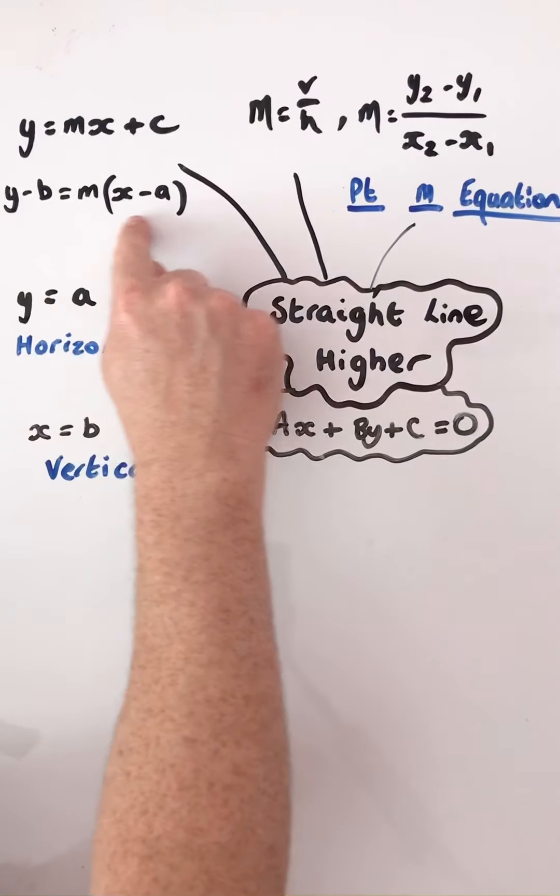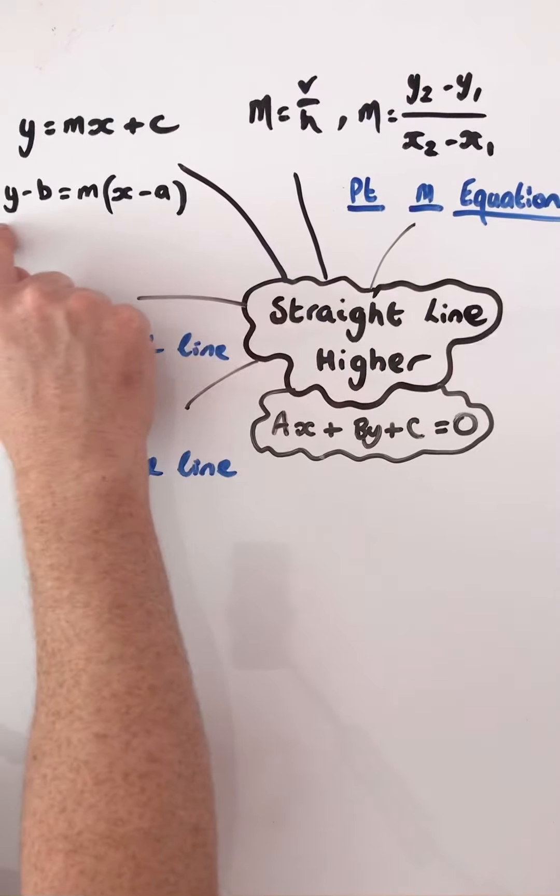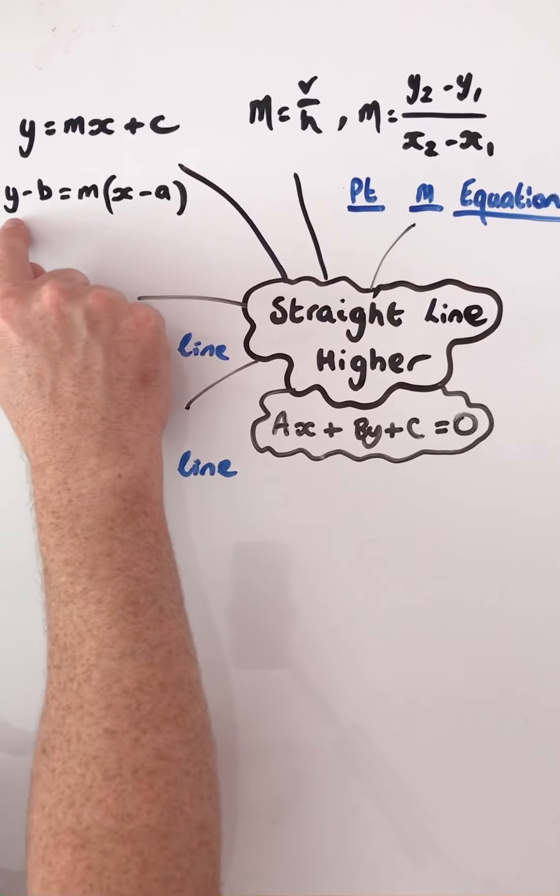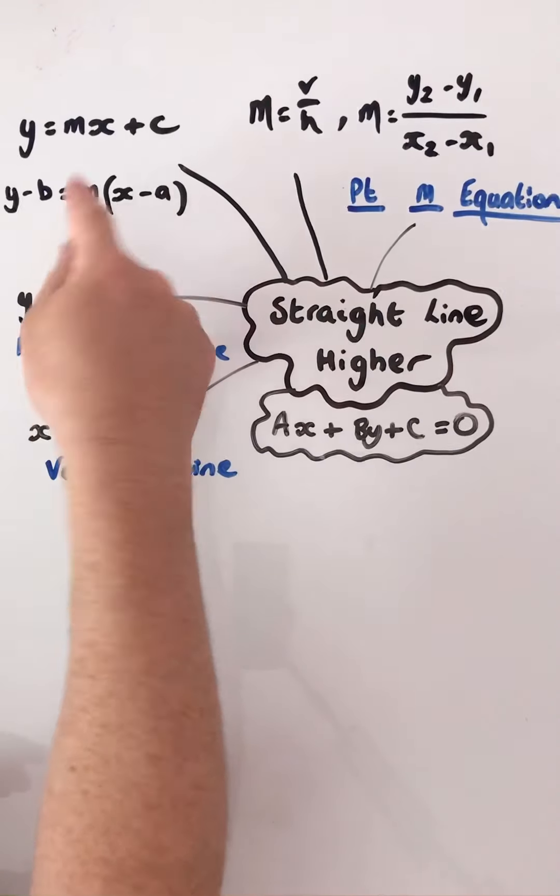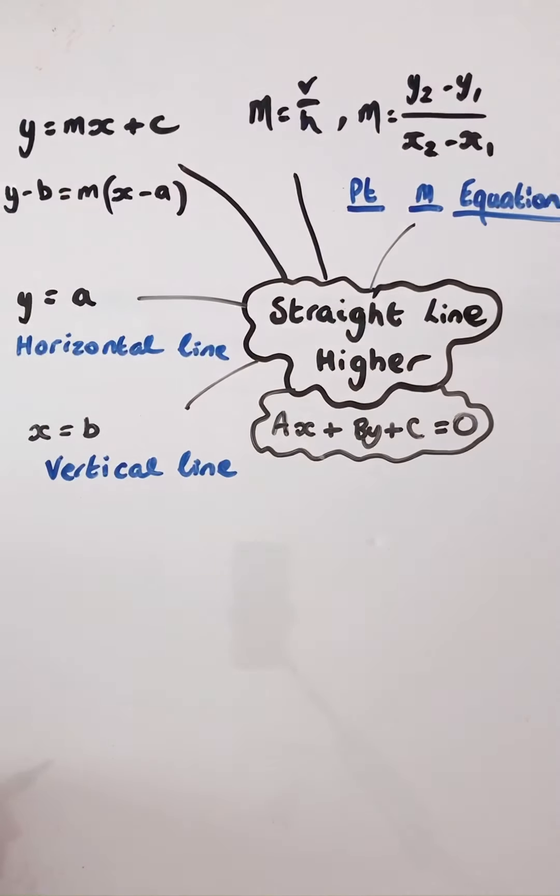We end up using and favouring, I would say, the majority of pupils, using this formula to work out the equation of a straight line given the gradient and the coordinate point a, b.